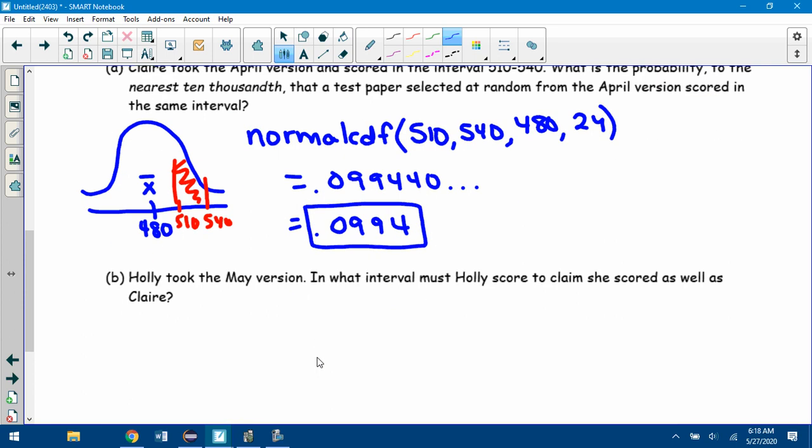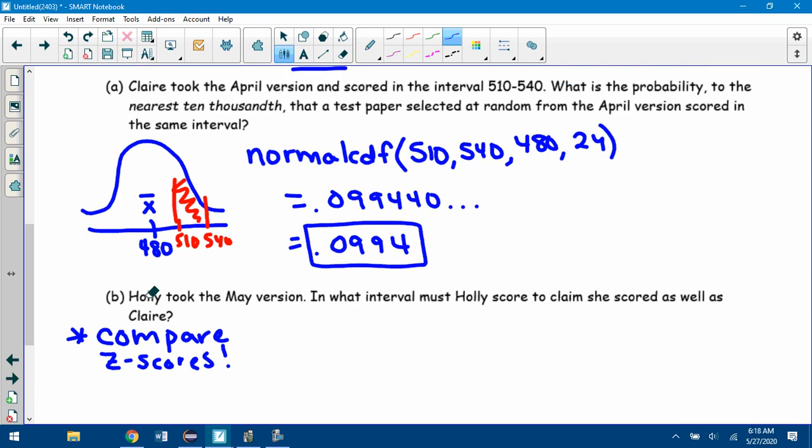No z-scores necessary. Part B is where you would use z-scores. Holly took the May version. In what interval must Holly score to claim she scored as well as Claire? When you're comparing two different tests and you want to normalize and see what the results say about each other in comparison to one another, that's the only time you would use a z-score. To do this one, we gotta compare z-scores. We want to know what scores would Holly get that would mean the same as 510 and 540 relative to the test she took. So let's first look at Claire. Claire took the April test. The April test had a mean of 480 and a standard deviation of 24.